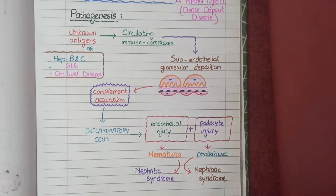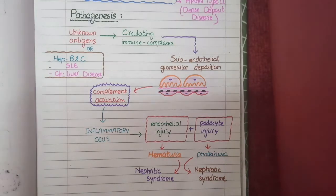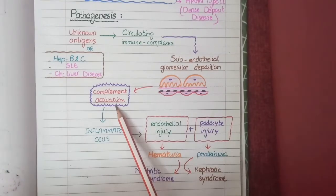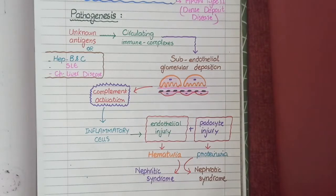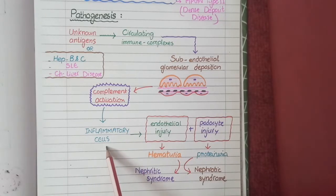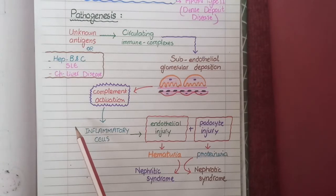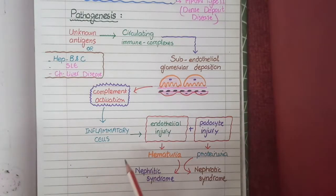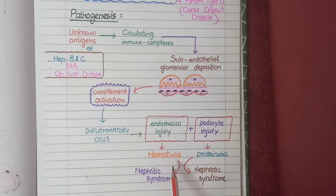This is an important difference between membranous nephropathy and membranoproliferative glomerulonephritis. These subendothelial deposits, composed of antigens and antibodies, mediate activation of the complement system via the classical pathway of complement activation. Activated complement proteins such as C3a and C5a act as chemotactic factors for inflammatory cells, which arrive at the subendothelial location and cause damage to endothelial cells and the glomerular basement membrane, resulting in hematuria.